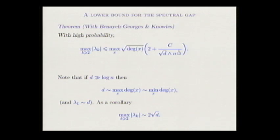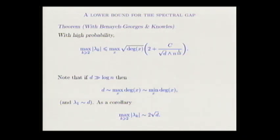What I want to speak about in the first part of the talk is the bound saying that the largest eigenvalue is at most the max of the L2 norm — the max of the square root of the degrees — times 2, plus something going to 0. The consequence is that when the degree is much larger than log n, since by Bernstein's inequality the degrees concentrate, this inequality implies that the second largest eigenvalue is at most 2 times square root of d. This fills the gap between log n to the fourth and the Feige–Ofek regime.